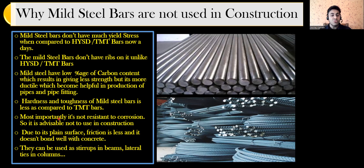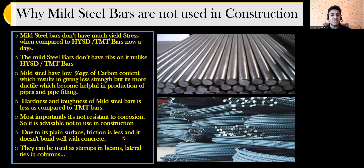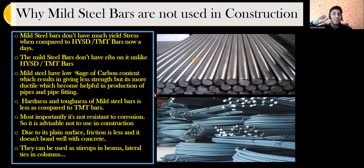Most importantly, mild steel is not resistant to corrosion, so it is advisable not to use it in construction. HYSD and TMT bars, on the other hand, can resist corrosion. Also, due to its plain surface, friction is less and it doesn't bond well with concrete. The ribs on TMT/HYSD bars create good friction between the concrete and the rebar.